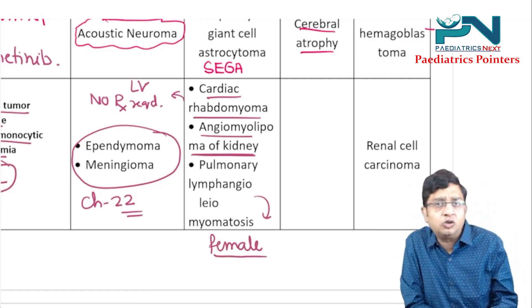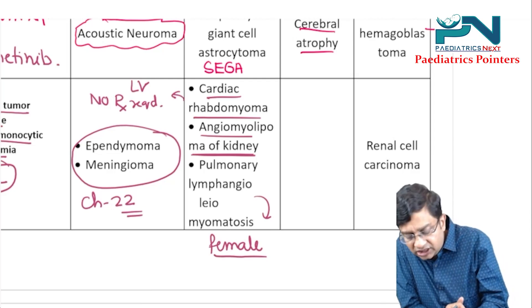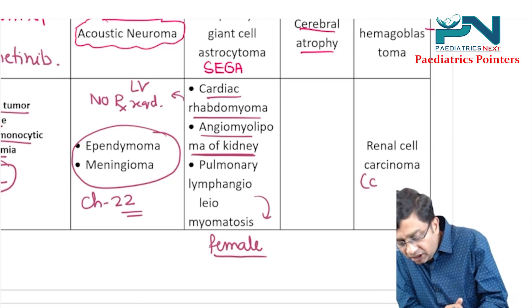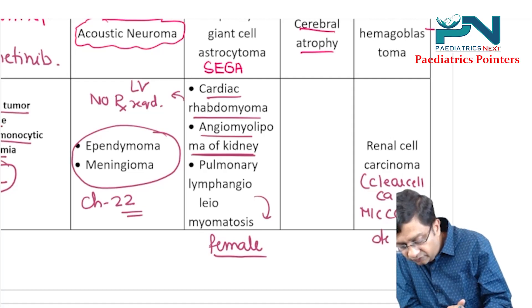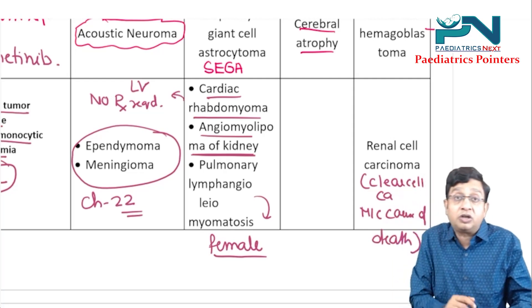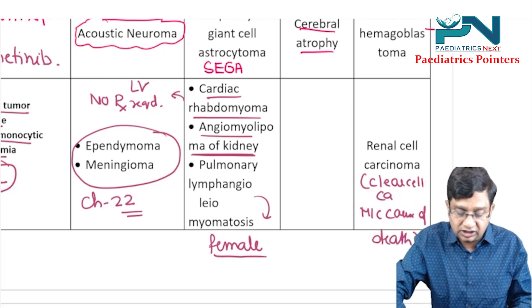In VHL, the tumor is renal cell carcinoma — particularly clear cell carcinoma. It is also the most common cause of death in VHL syndrome.